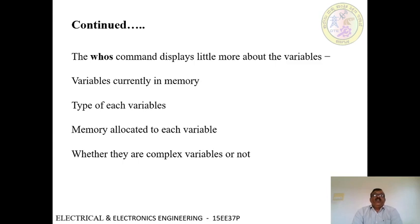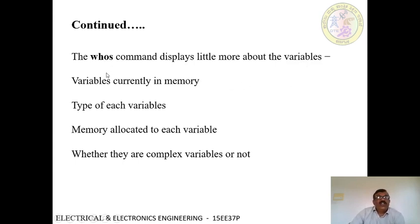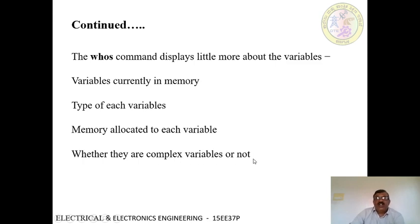Another command is the whos command — W-H-O-S — which displays a little more detail about the variables. It shows the variables currently in memory, the data type of each variable, the memory allocated to each variable, and whether they are complex variables or not. All these details will be displayed if you type the whos command in front of the command prompt.